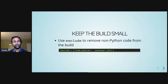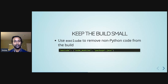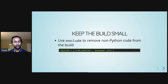Another important use case is keeping the build small. In my case, I had a repository with Python code as well as a React.js front-end, and I don't want any of that JS code or node modules clogging up the Zappa build that gets sent to Lambda. You can use an exclude flag in the zappa_settings.json to exclude certain paths that you don't want in the build.